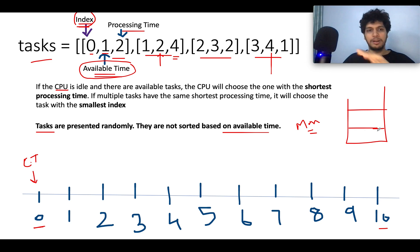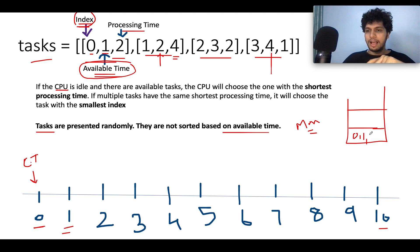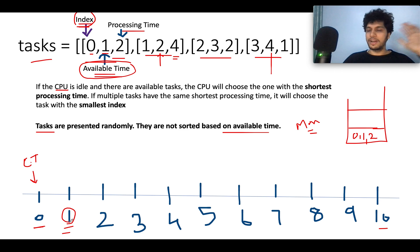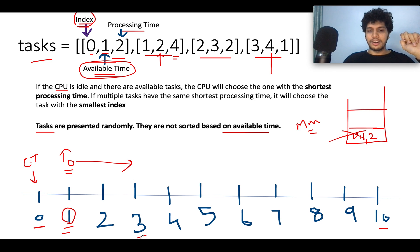At time zero, no task is available. At time one, one task is available — we insert it into the min heap. Since it's the only task, we pull it out and execute it. This task takes two units of time, so the CPU is occupied until time three. The first task to execute is task 0.